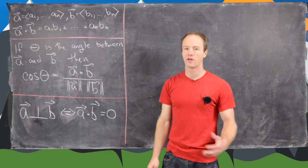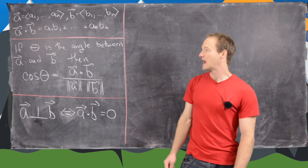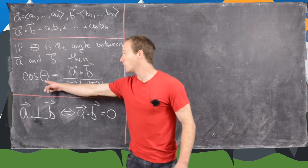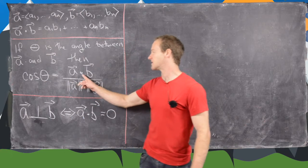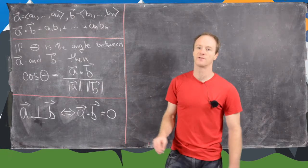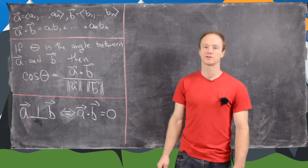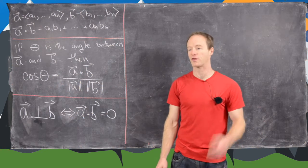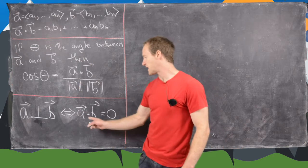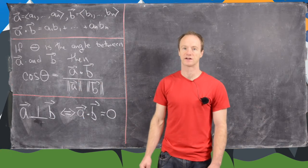So that's a scalar. In other words, the dot product of two vectors is just a number. Now if theta is the angle between a and b, then the cosine of that angle can be described as the dot product of those two vectors divided by the product of the length of those two vectors. And finally, we have this rule that tells us when the vectors are perpendicular or orthogonal. So a is orthogonal to b if and only if a dot b equals 0. This is a super important classification of orthogonal vectors.